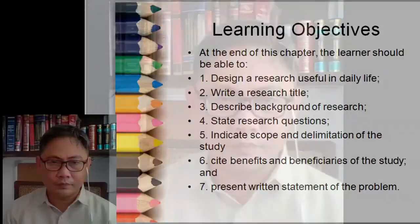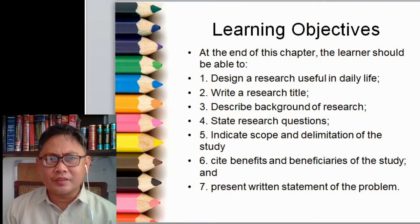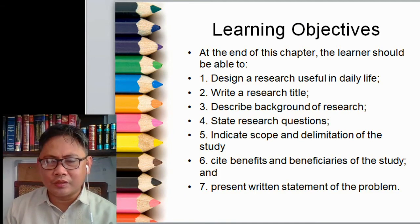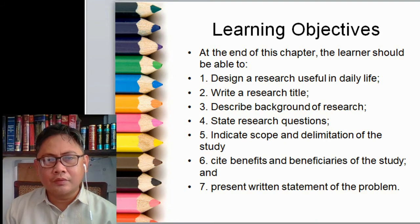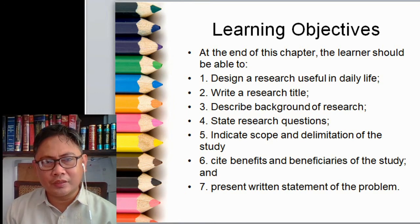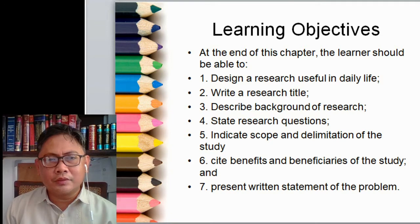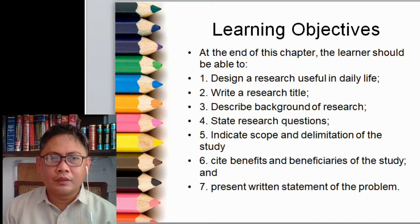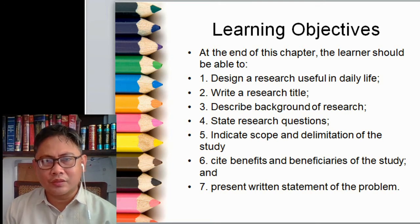Our learning objectives in this lesson are: first, the learner should be able to design a research useful in daily life — this is Lesson 1. Second, write a research title — you should be ready in formulating your problem in order to write your research title, which we will discuss in Lesson 2. Third, describe the background of research and how to formulate your background of the study, which is part of Chapter 1 in your research output.